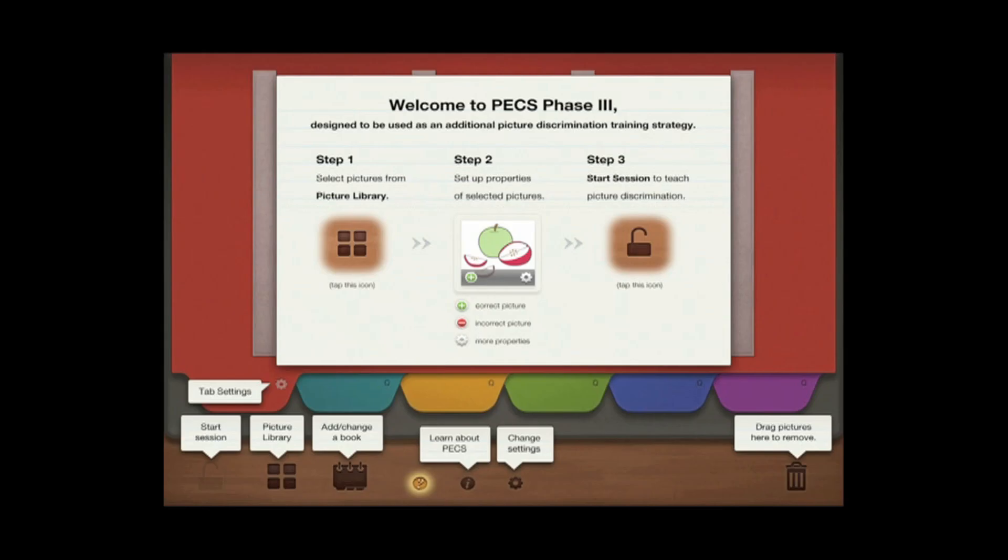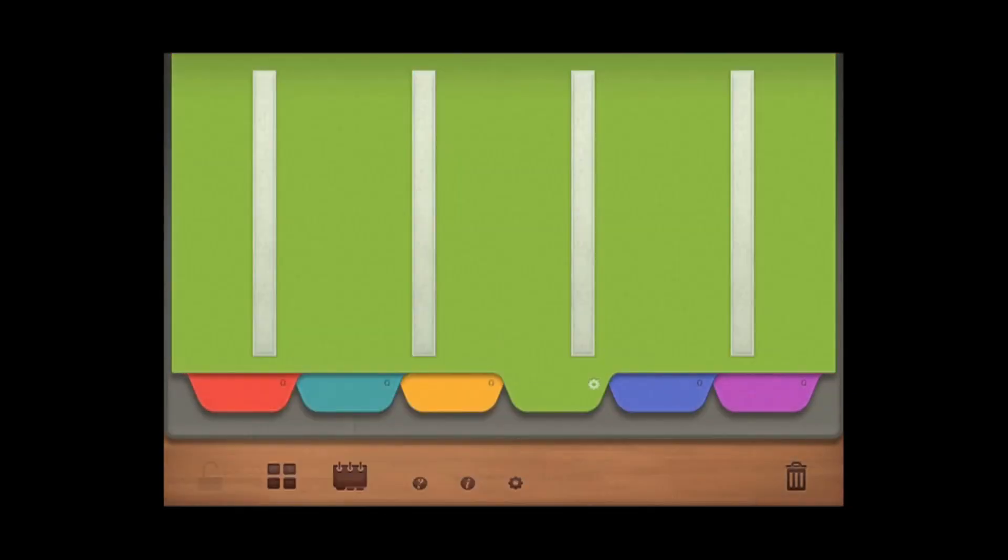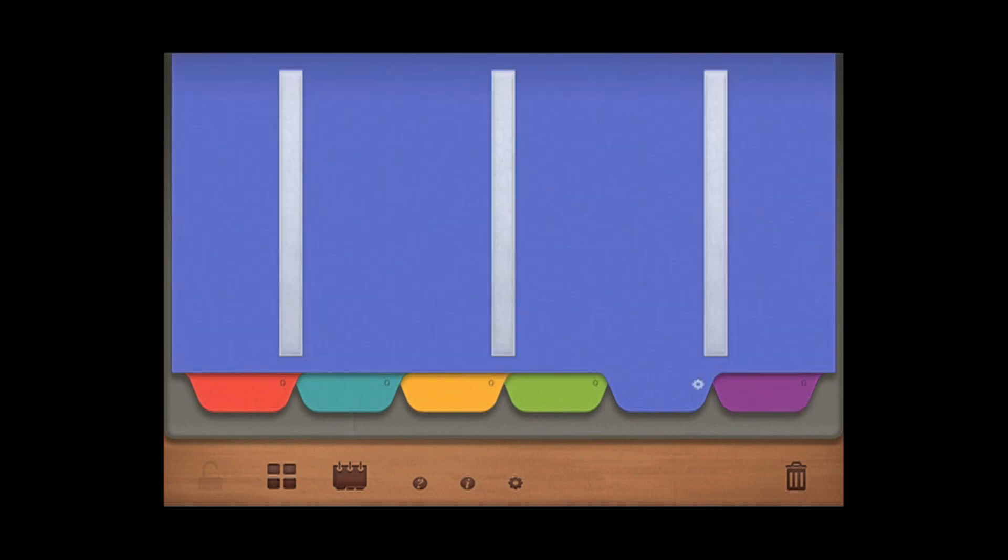Let's start the app to explore its features. As you can see, the welcome screen provides you with the steps to use the app. The app looks just like a PECS book. It has 6 tabbed pages in 6 different colors.